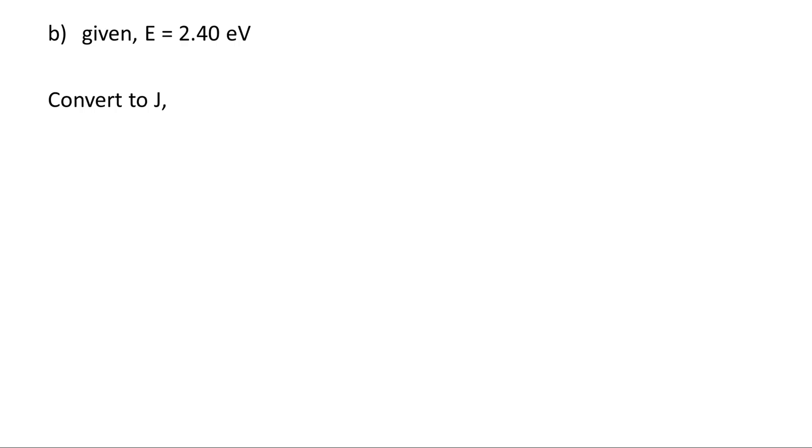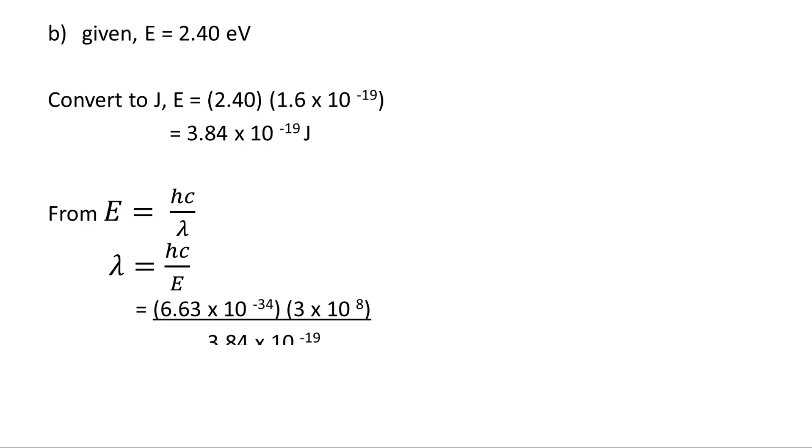Question B. To get the lambda of 2.4 electron volt photon energy, we have to convert it first into Joule by multiplying it with 1.6 to the power of negative 19 Joule. The answer is 3.84 to the power of negative 19 Joule. Then, using E equals to Hc over lambda, rearrange the equation like this. Then substitute the constant and the energy that we have just converted above. And the final answer is 5.18 to the power of negative 7 meters.